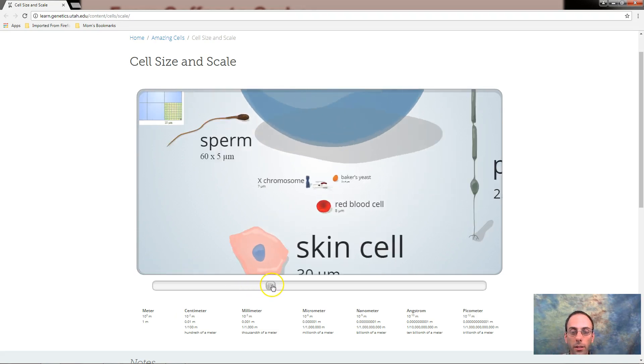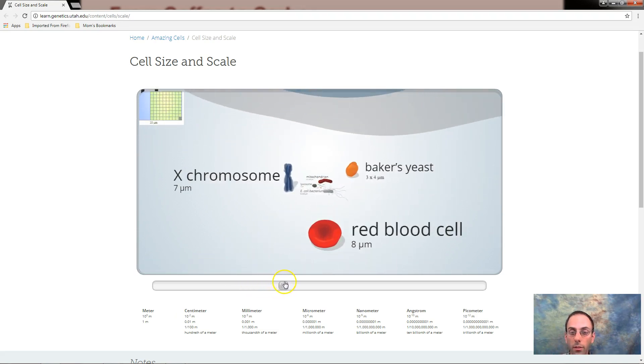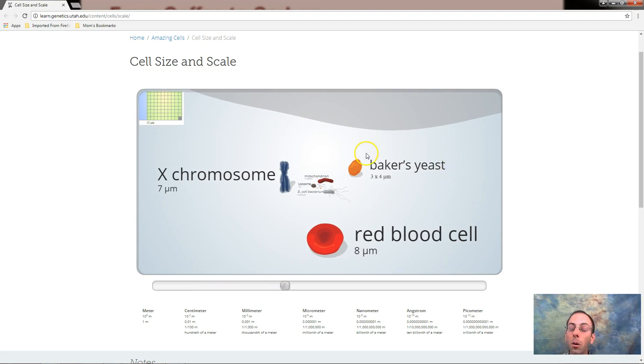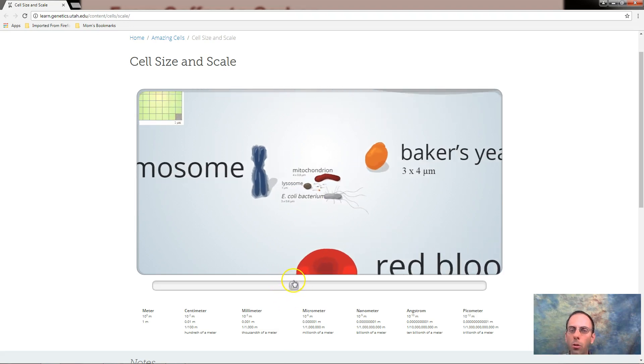We're getting smaller here. Red blood cell. Baker's yeast. How small they are in comparison to the X chromosome. You see some also small things. The mitochondria. How that looks compared to the red blood cell. Well if we zoom in even further.